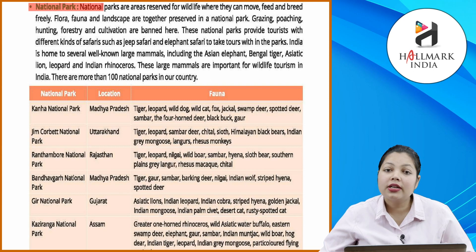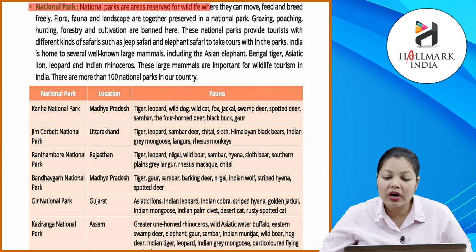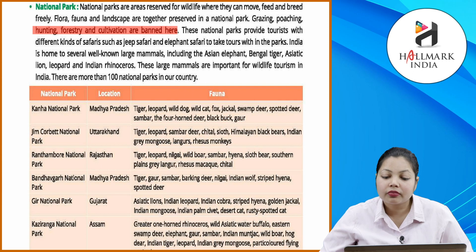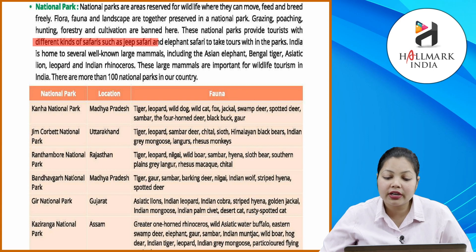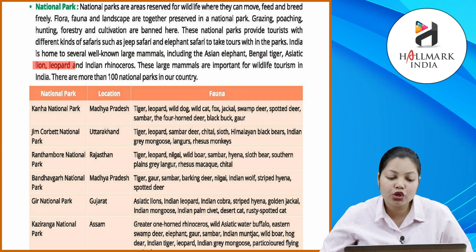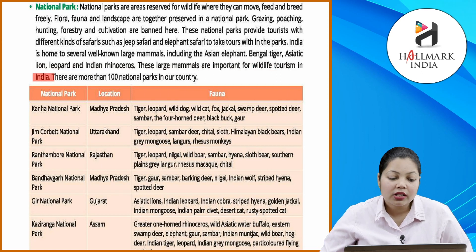National parks are areas reserved for wildlife where animals can move, feed, and breed freely. Flora, fauna, and landscape are together preserved in a national park. Grazing, poaching, hunting, forestry, and cultivation are banned here. National parks provide tourists with safaris such as jeep safari and elephant safari. India is home to several well-known large mammals including the Asian elephant, Bengal tiger, Asiatic lion, leopard, and Indian rhinoceros — there are more than a hundred national parks in India.